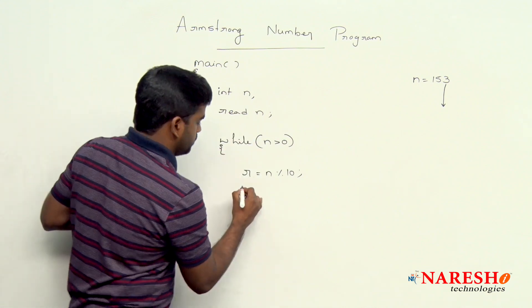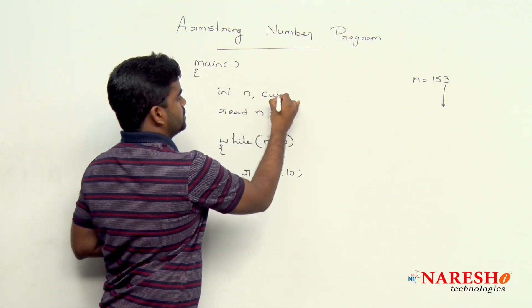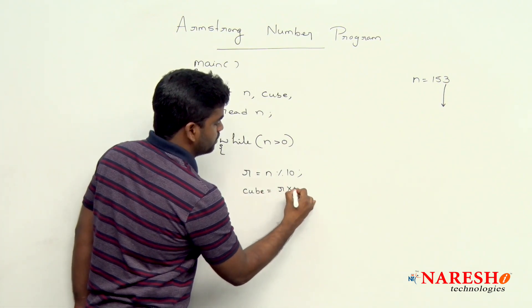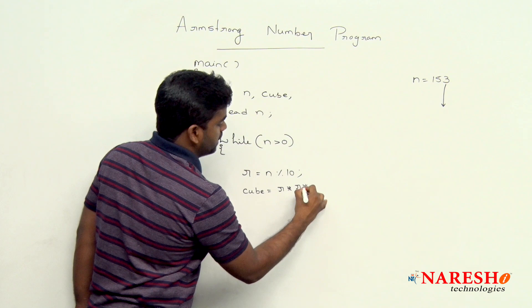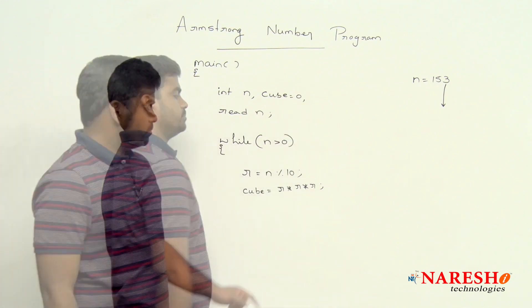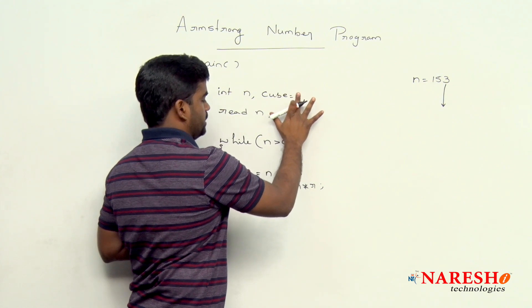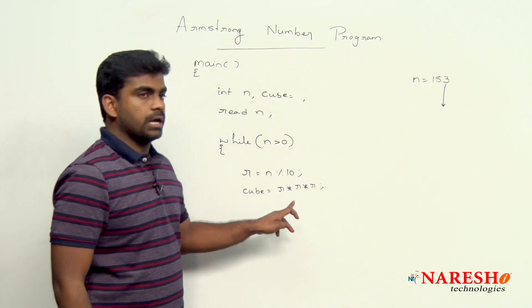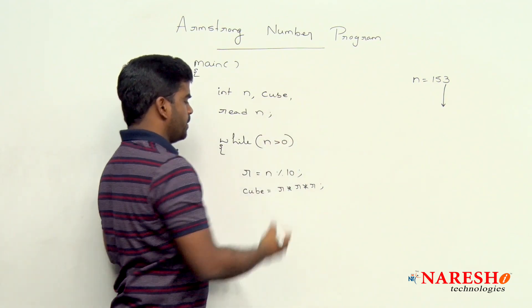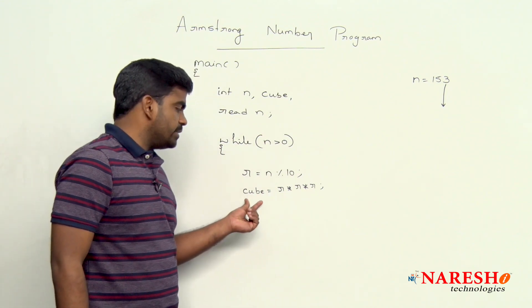We are declaring one extra variable, cube, and just r is multiplied with r is multiplied with r. We are performing that cube operation on r, and the result we are storing into that cube variable.